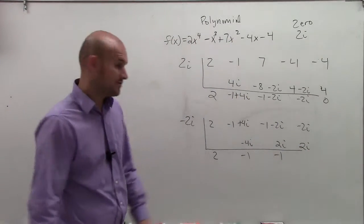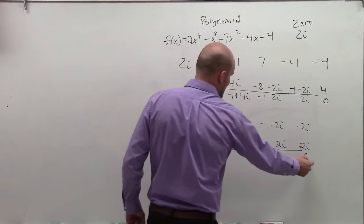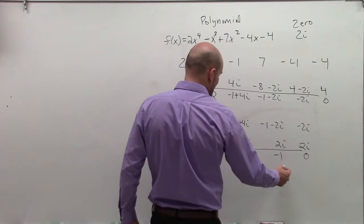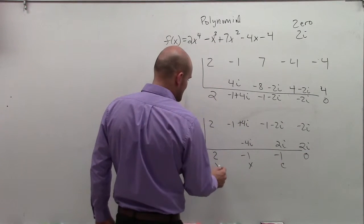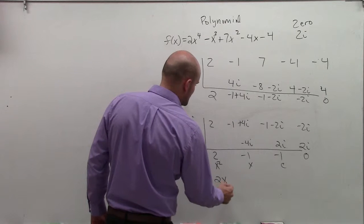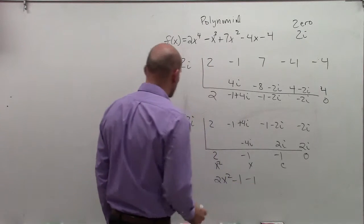So now, my final remaining equation, remember that's your remainder, 0. Constant is negative 1, linear x, and quadratic. So I have 2x squared minus x minus 1.